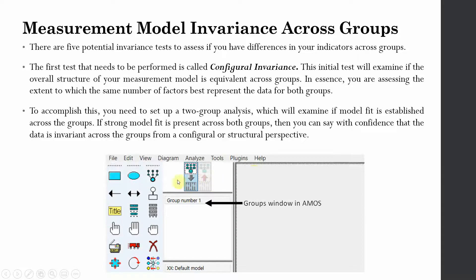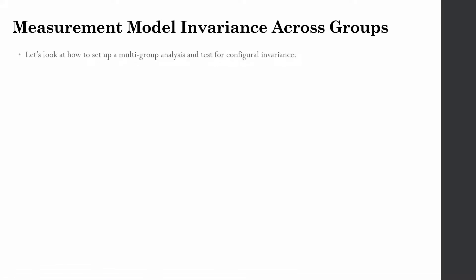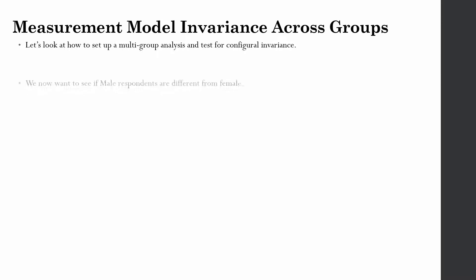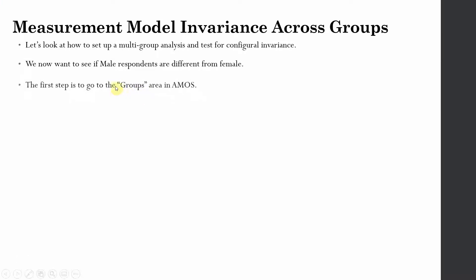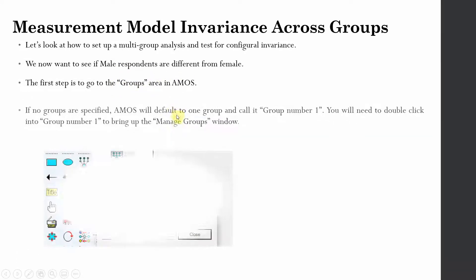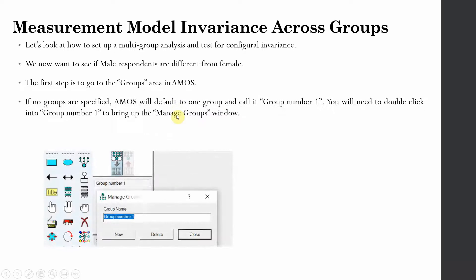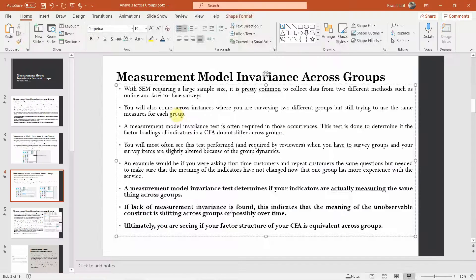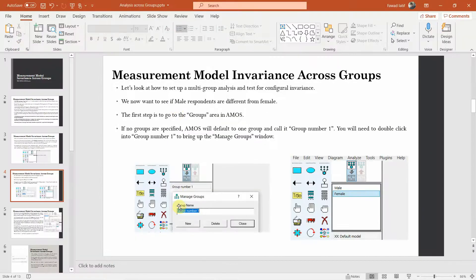Now the first step is we have to establish our groups. I've got two groups here — male and female. So how do I establish groups in my data? Let's go to AMOS.